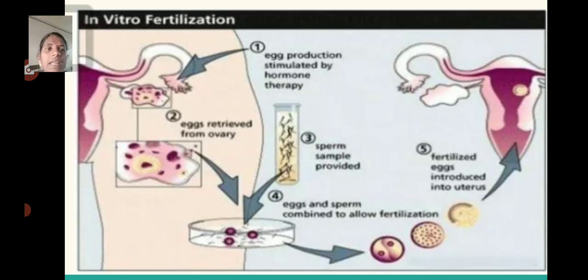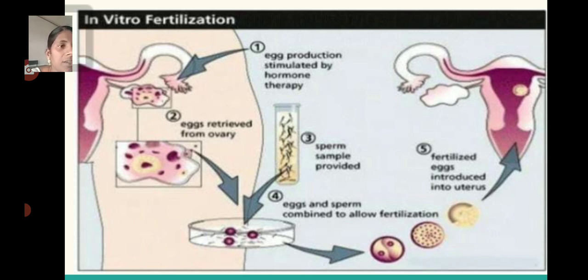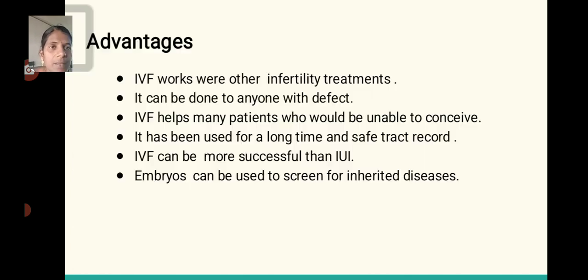In vitro fertilization overall diagram: The first diagram shows egg production stimulated by hormones. The second diagram shows the egg retrieved from the ovary. Third, sperm sampling is provided. Fourth, egg and sperm are combined to allow fertilization. Finally, the fertilized egg is transferred into the uterus.